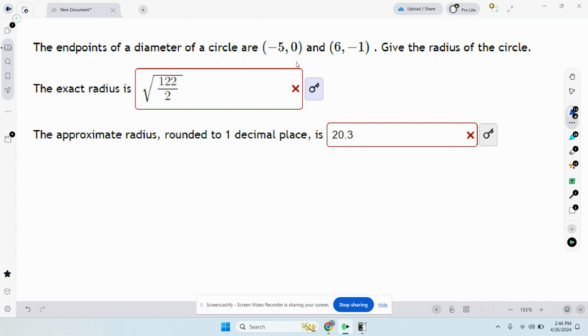So the first thing we want to do is figure out the distance between these two points. These are the endpoints of the diameter, so if I know the distance between these two points, that would be the length of the diameter. To find the length of the radius, I would just divide that diameter by 2.